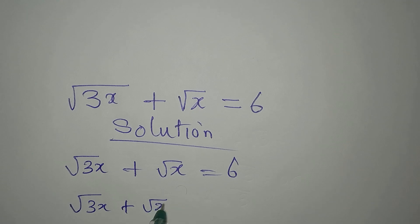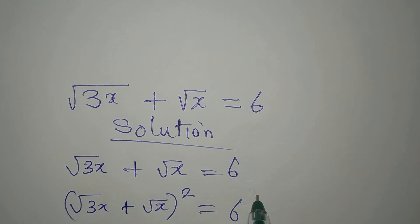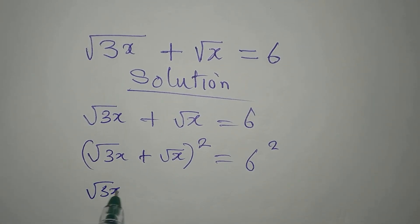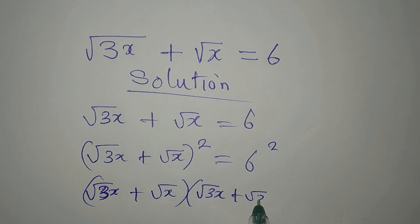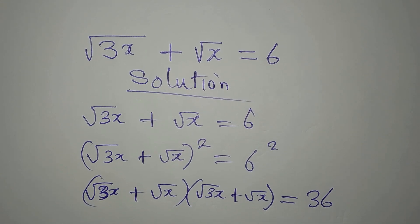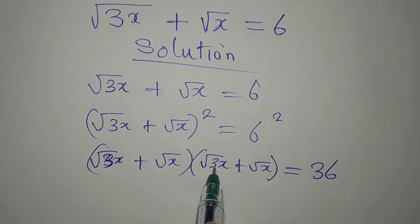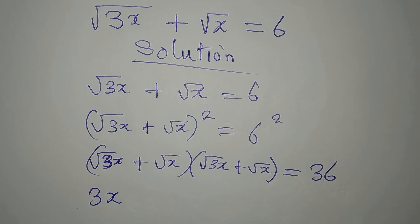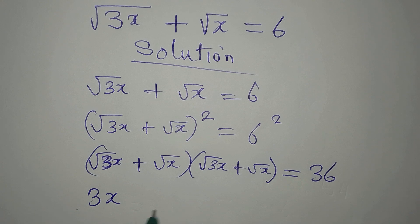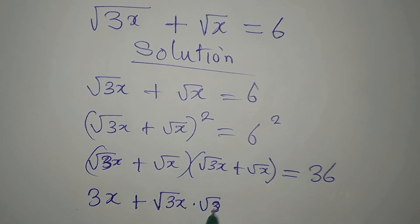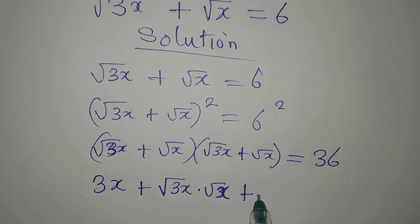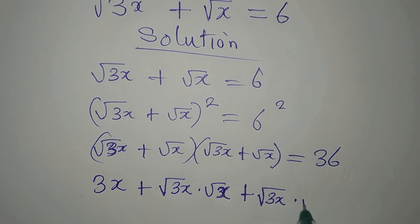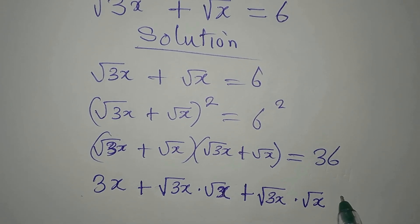So square root of 3x plus square root of x, all squared, equals 6 squared. This means square root of 3x plus square root of x multiplied by itself equals 36. Expanding: square root of 3x times square root of 3x gives 3x, then square root of 3x times square root of x, plus square root of x times square root of 3x, then plus x.